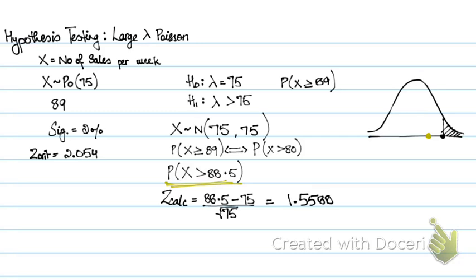So simply say accept H0, and write a conclusion that we do not have enough evidence to conclude that the mean number of sales has increased.